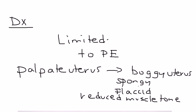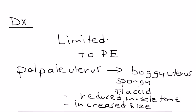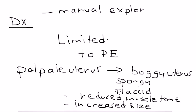A boggy uterus with reduced muscle tone is a hallmark sign of postpartum hemorrhage, along with vaginal bleeding. You are also looking for increased uterine size, which is an important diagnostic finding. If the condition involves failure of placental expulsion, you also want to manually explore and remove the placenta.